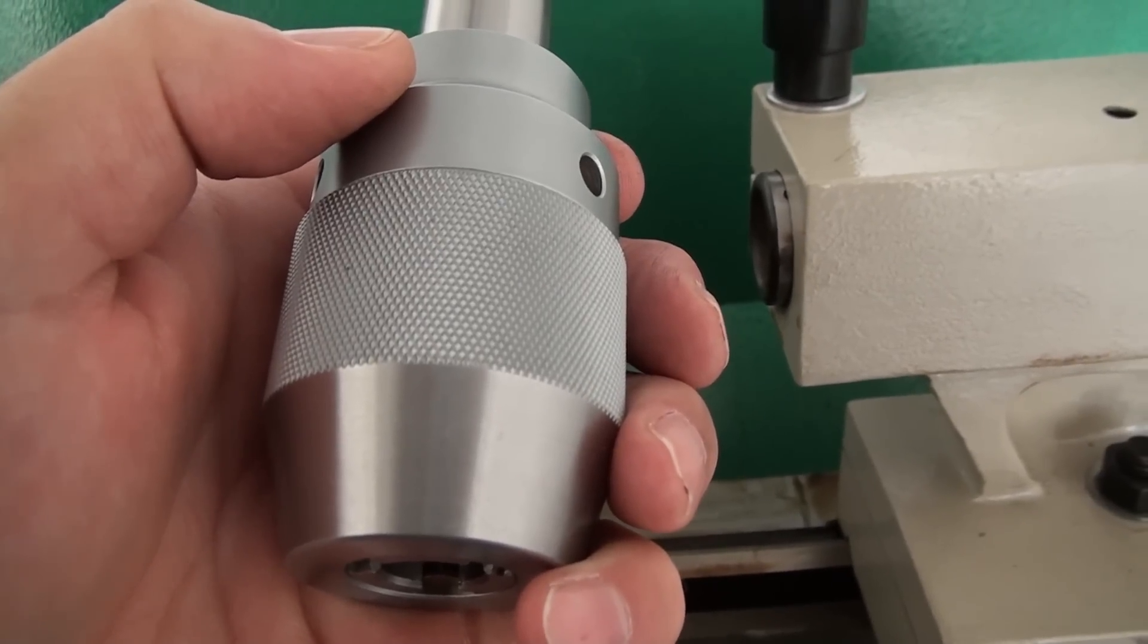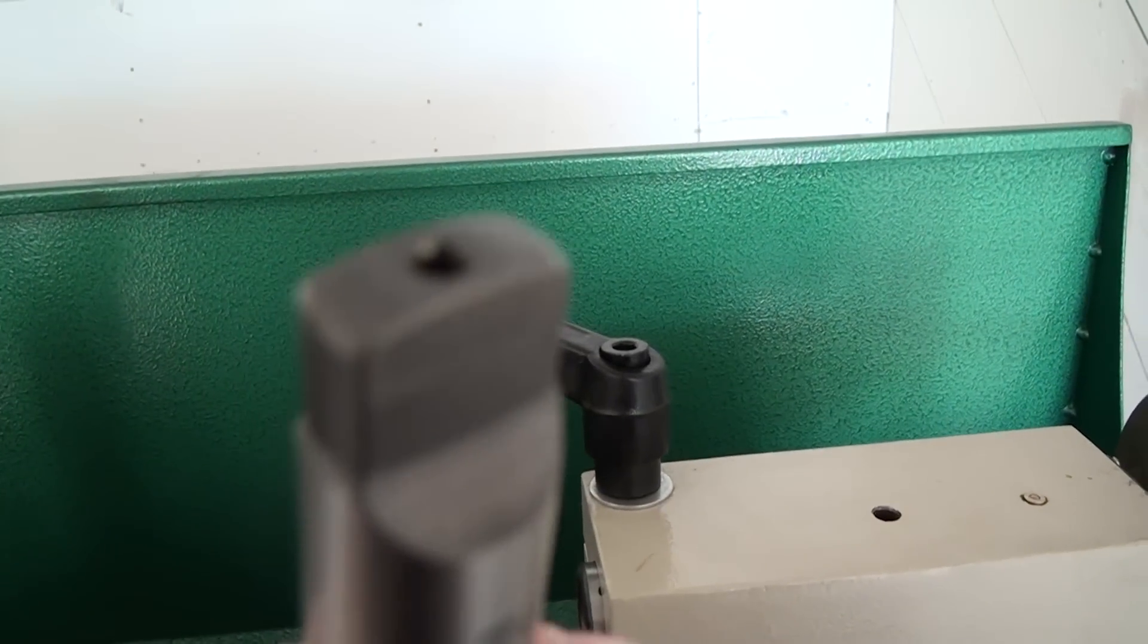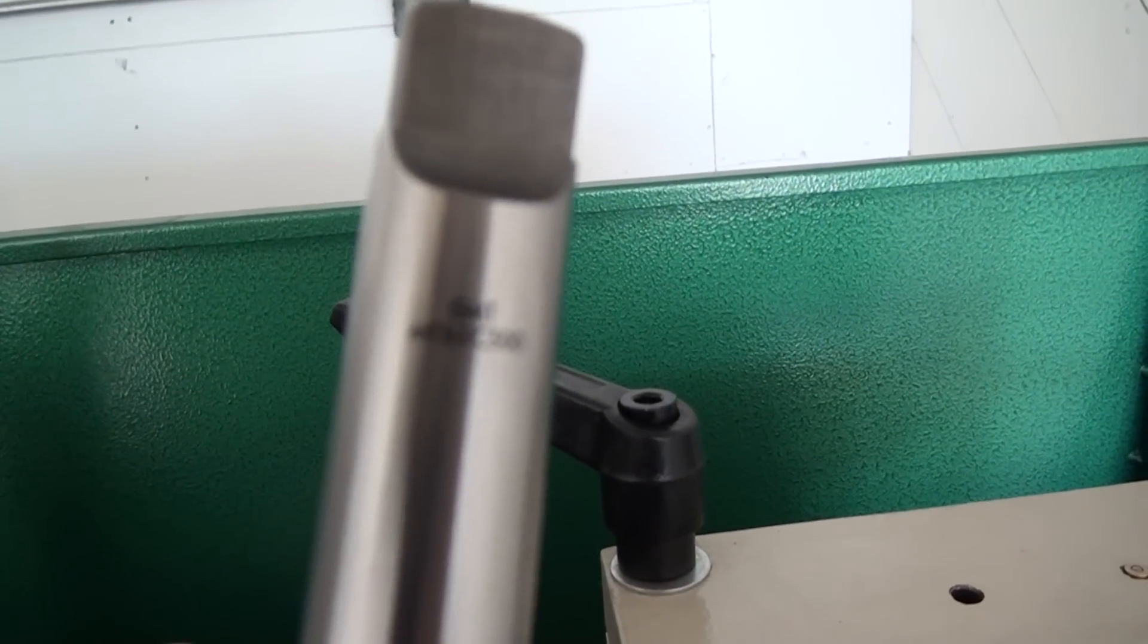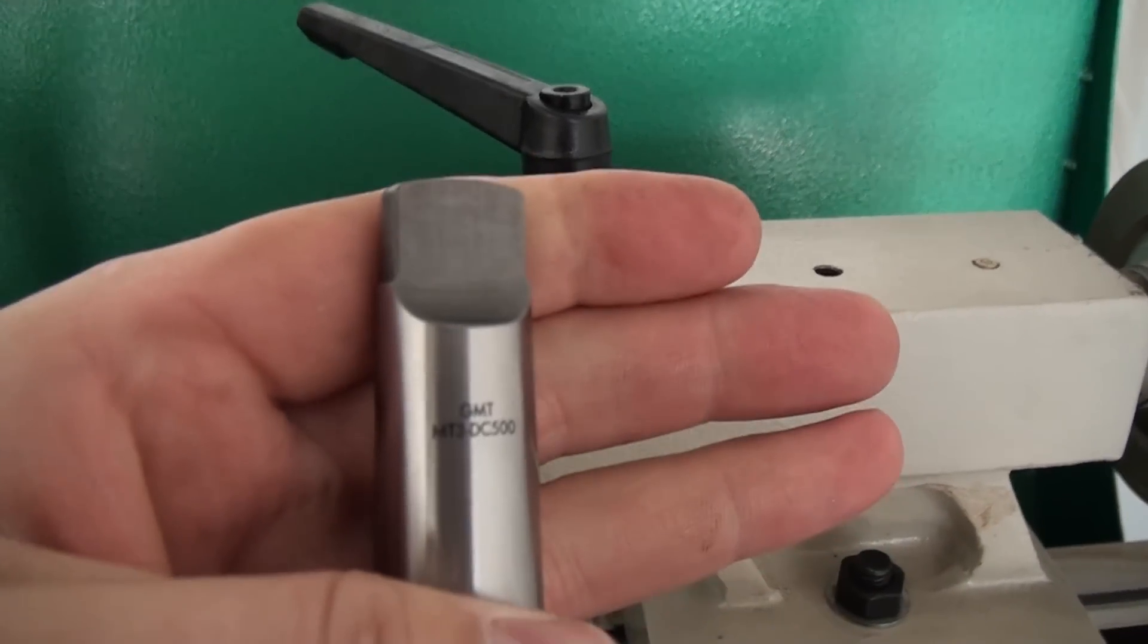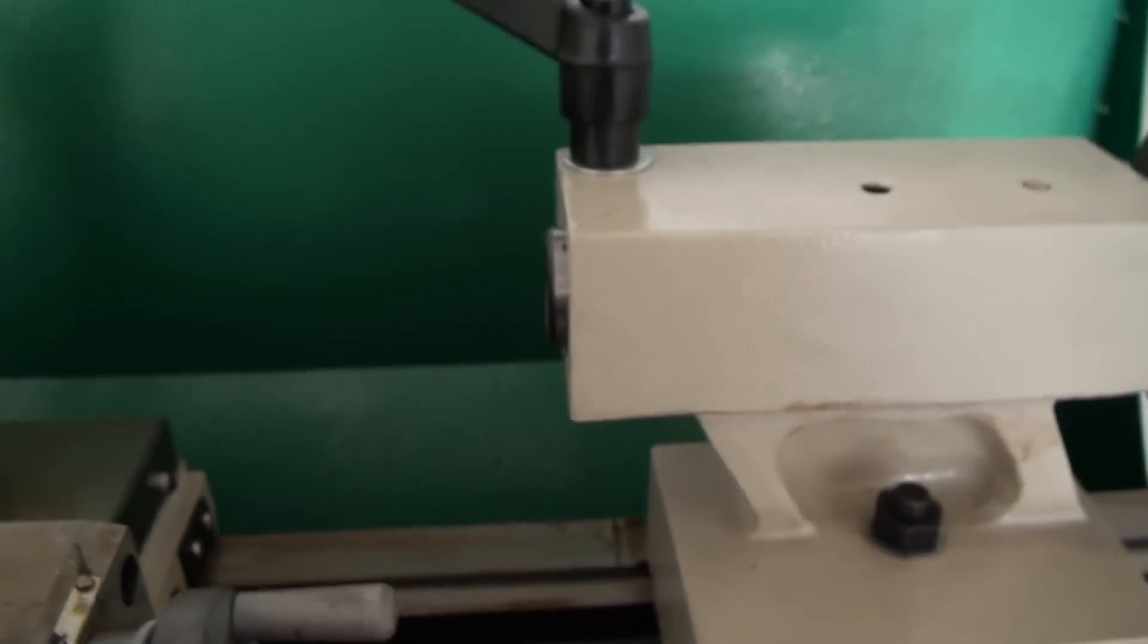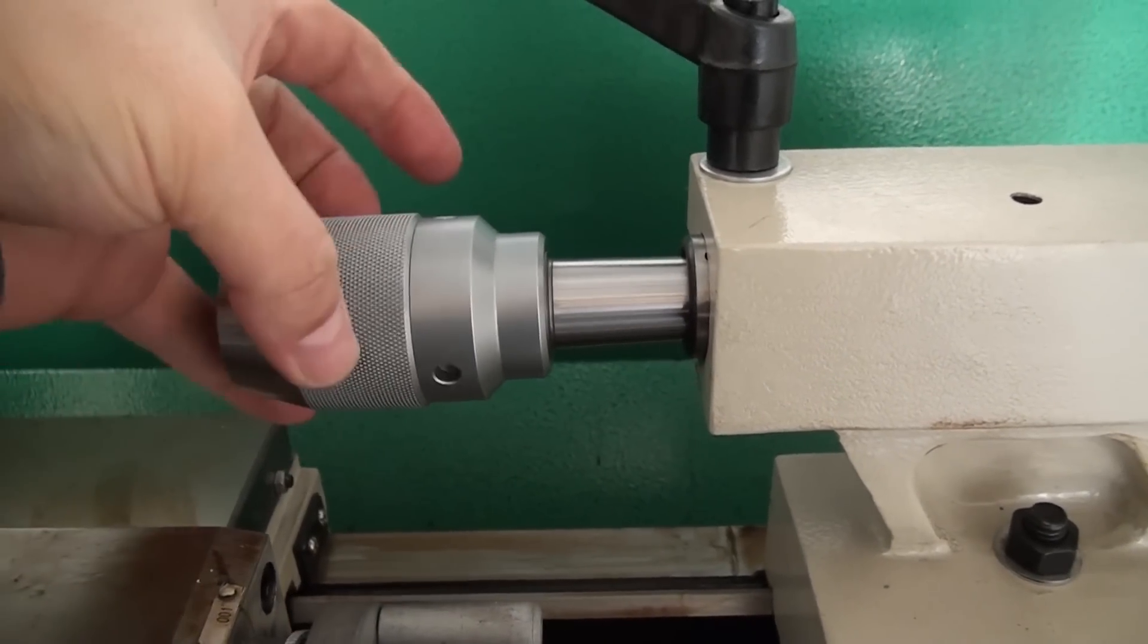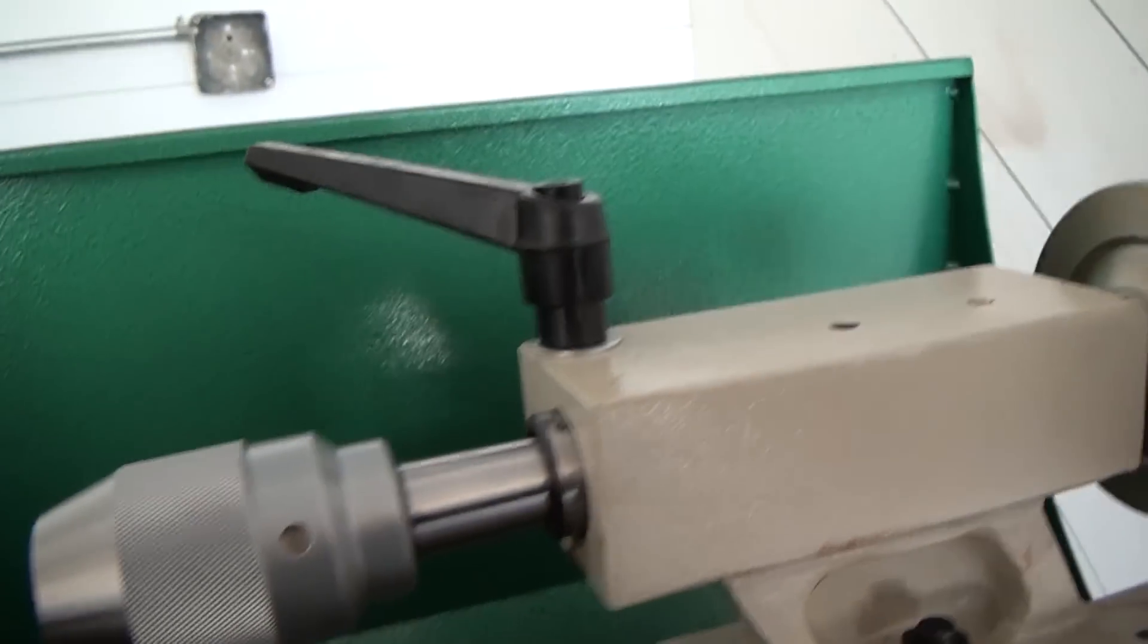I also bought this drill chuck, which I think is not going to work because of this tang. This is a Jacobs, and looks like we're not going to get a focus. The taper's correct, the Morse taper, but there's nothing to engage that tang at the bottom, and I'm not sure if that's normal or not.